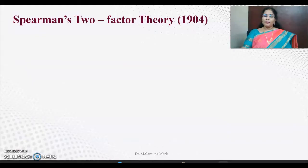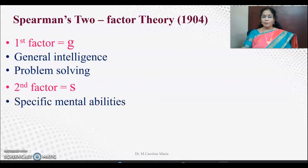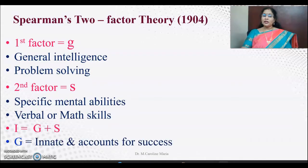Then Spearman came forward. He said that intelligence does not depend on one factor alone; it depends upon two factors. The first factor is a general factor and the second is a specific factor. The general factor includes general intelligence and problem-solving capacity, and the specific factor includes specific mental abilities, both verbal and mathematical skills. Spearman said intelligence is equivalent to general factor plus specific factor. The general factor is innate, inherited through heredity, and accounts for success, whereas the specific factor is what we acquire during our lifetime through experience.